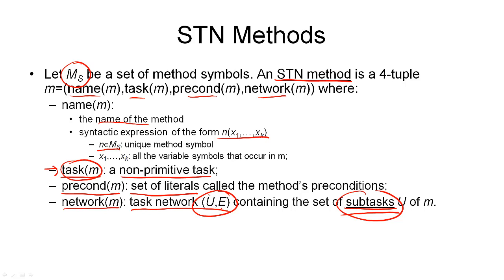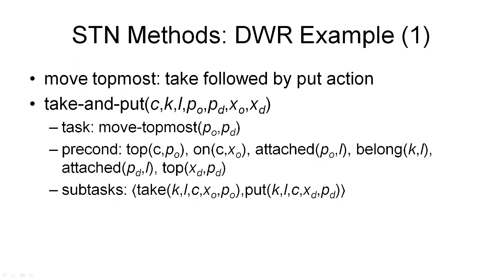There may be different methods for the same task, achieving it in different ways by having a different network, and usually different preconditions. Methods, like task networks, can be totally ordered or partially ordered — that is simply a property of the network associated with the method. In the next few slides, I'll show some examples of STN methods for moving a stack of containers to another pile while respecting the order.